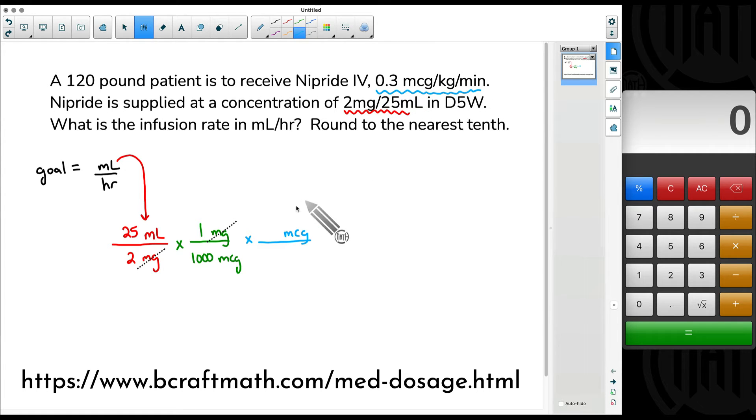0.3 is the micrograms. And with weight-based, I call these the double slash. Whatever two words are in the double slash, in this case, kilograms and minutes, I'm going to keep those two words together, but they're still two separate words. And I'm going to put them at the bottom here. So I'm going to put the kilograms. And technically, it is getting multiplied by minutes, but don't worry about it.